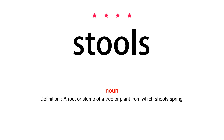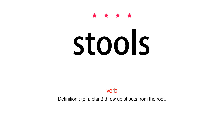Noun. Definition: A root or stump of a tree or plant from which shoots spring. Verb. Definition: Of a plant, throw up shoots from the root.